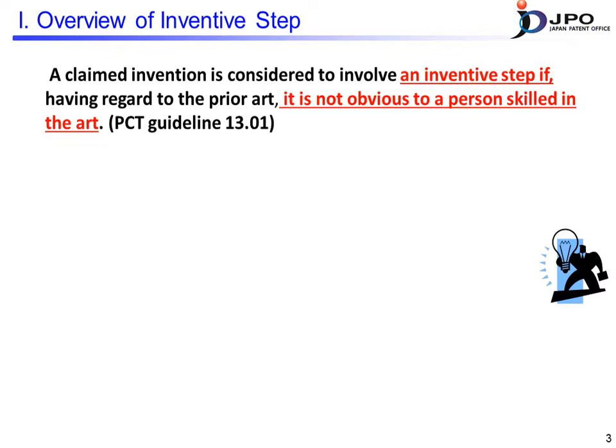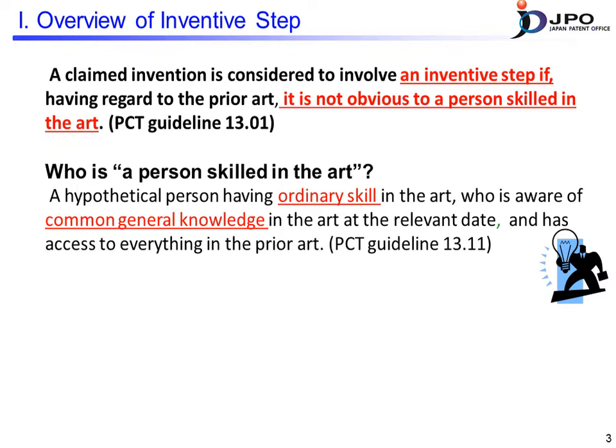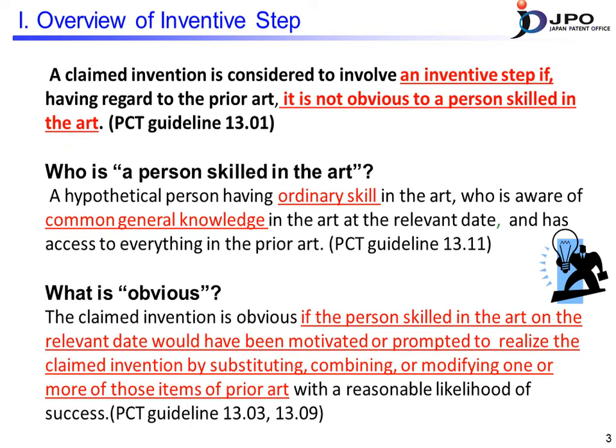Please refer to the text on novelty for a description of what prior art is. In this lecture, I will explain the terms 'a person skilled in the art' and 'obviousness.' The PCT guidelines define a person skilled in the art as a hypothetical person presumed to have average knowledge and ability of the technology related to the invention, and to be aware of what was common general knowledge in the art as of the standard date of the claimed invention. The term 'standard date' refers to the international filing date or priority date of the claimed invention.